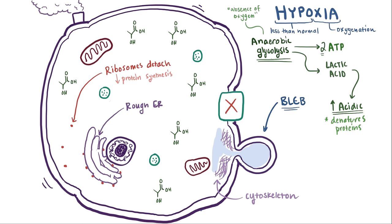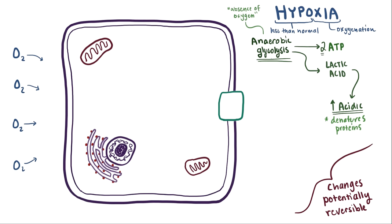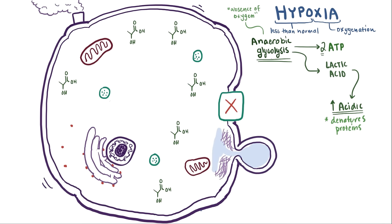Now, up to this point, it's not all bad, because one super important thing about these processes that happen to the cell is that they're potentially reversible, meaning that if we all of a sudden get oxygen again and start making ATP, then these changes aren't necessarily permanent. After enough time, though, irreversible damage can happen to the cell.